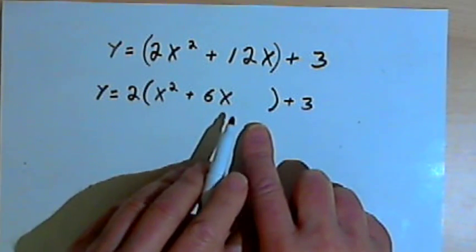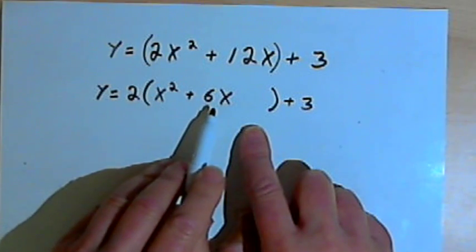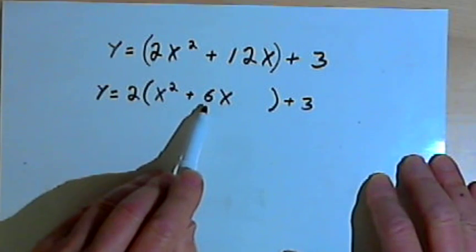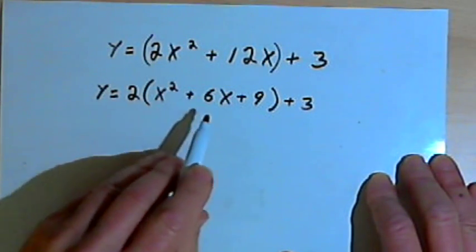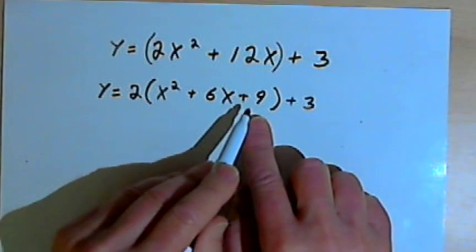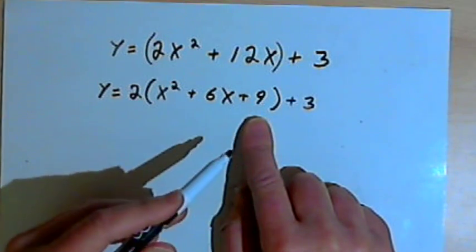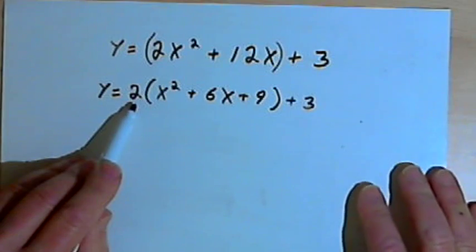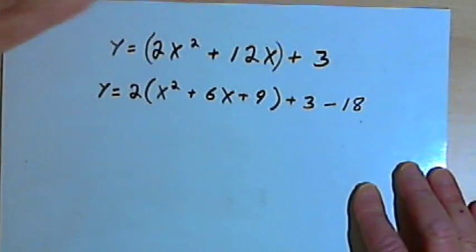Now I want to work inside the parentheses — I've got the first two terms of a trinomial: x squared plus 6x. If I want this trinomial to be a perfect square, I can create that by taking that 6x, taking the coefficient of 6, dividing it in half, and squaring it. So I'm going to have x squared plus 6x plus 9 — that's going to be a perfect square. Now, I've just added a plus 9 inside the parentheses, and I can't just add numbers to an equation and have it still balance. That 9 is multiplied by the 2 outside the parentheses, so I've really added 18. What I'm going to do at the end of the equation is just subtract 18. Now the equation is still balanced.